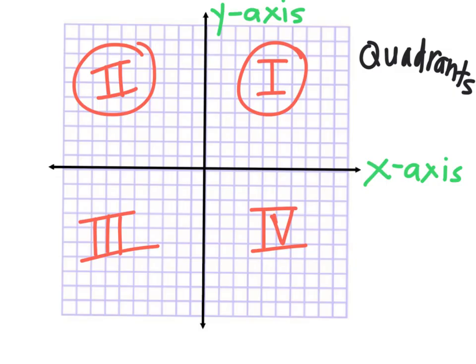One other special point on this graph is where the two axes cross — where the x and the y-axis meet right in the middle. That is called the origin. You can even label it if you want to. The origin has a coordinate of zero, zero.